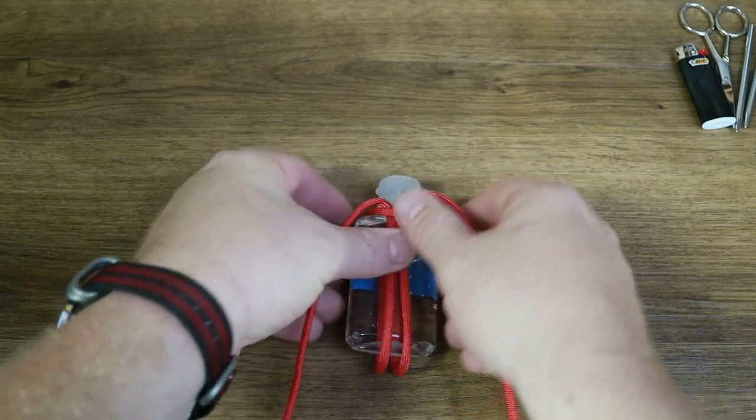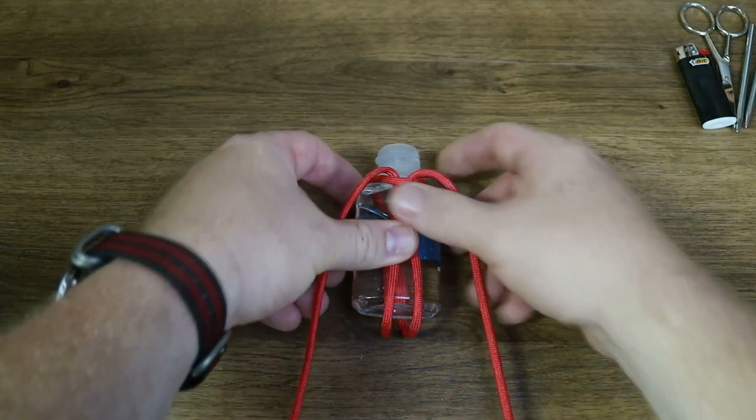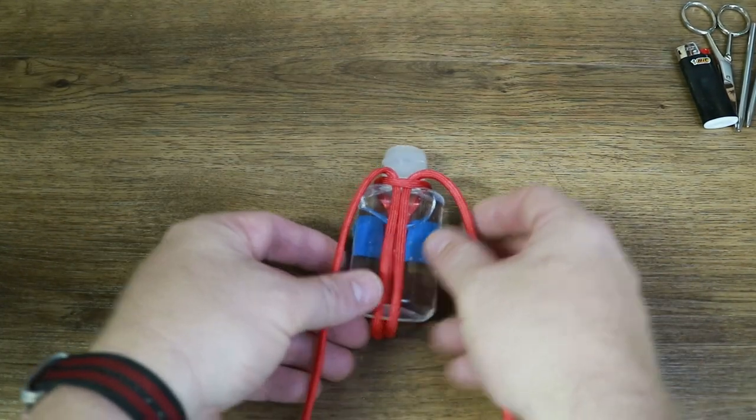Now we can start tying. For this grenade, we are using the classic Cobra knot, also called a Solomon bar. If you've ever tied any paracord or hemp, you most likely are familiar with this knot.